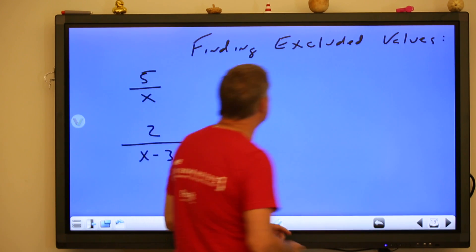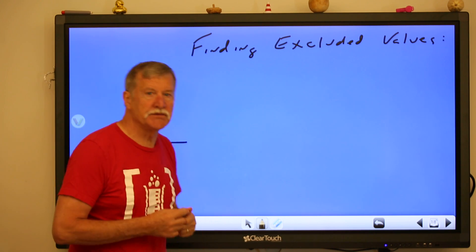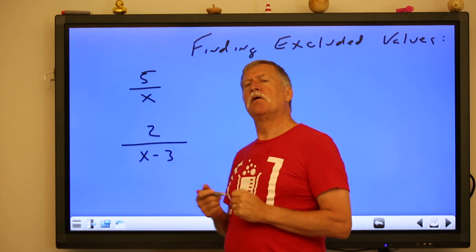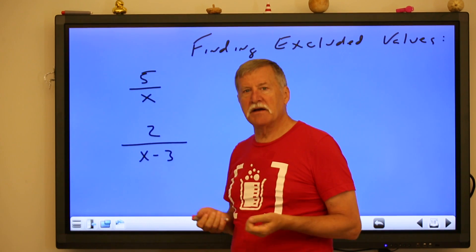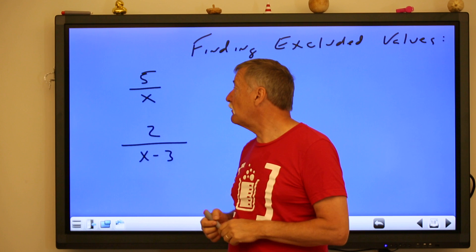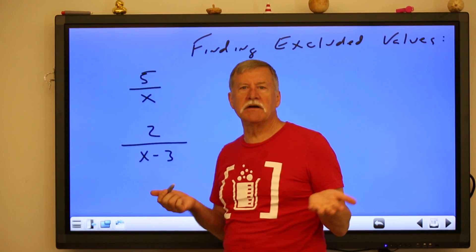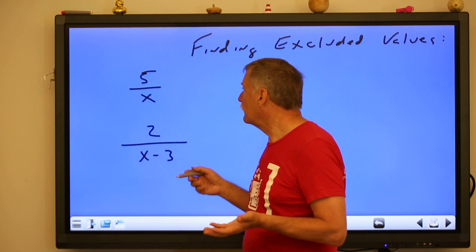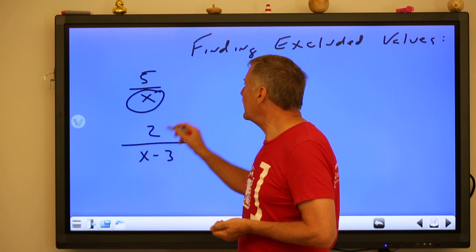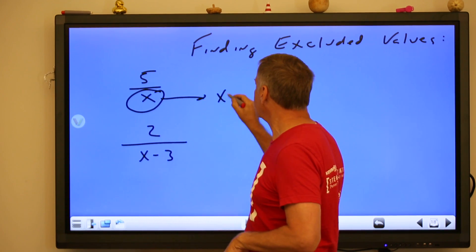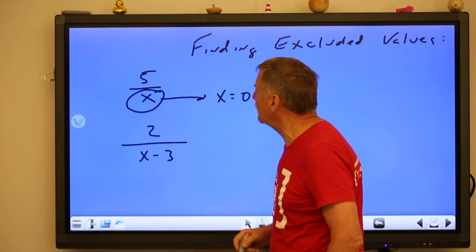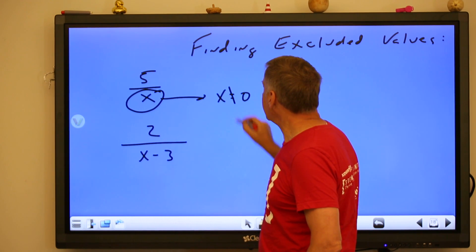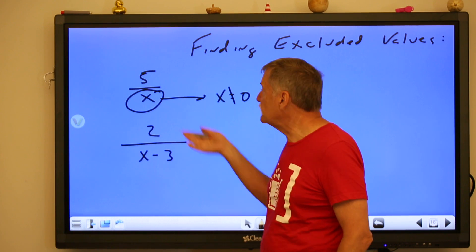What you'll be asked to do is find excluded values — what value or values would make the denominator equal to zero, which is what we do not want. Basically, all you have to do is set the denominator equal to zero. Here, the denominator is x, so set x equal to zero. If x is zero, five divided by zero is undefined, so we say x cannot equal zero — that's the excluded value.